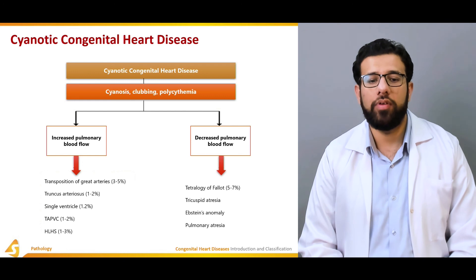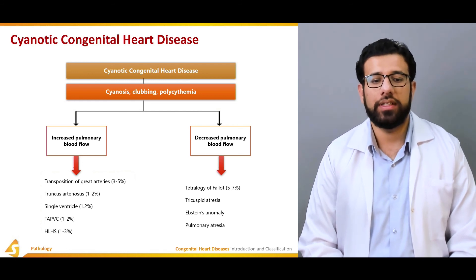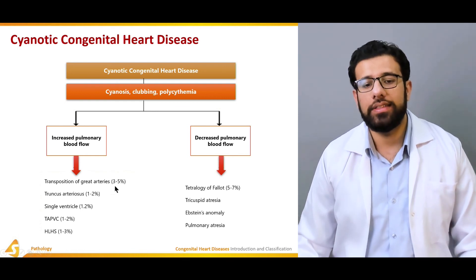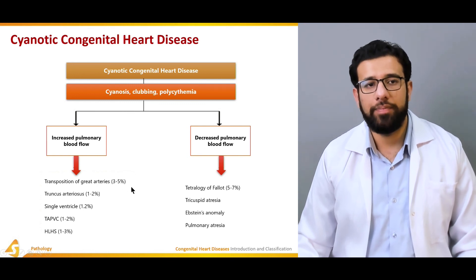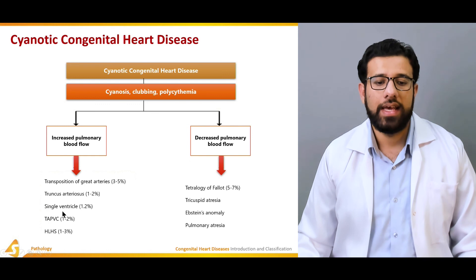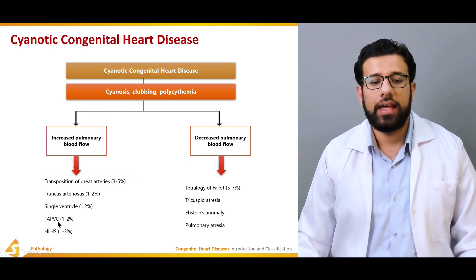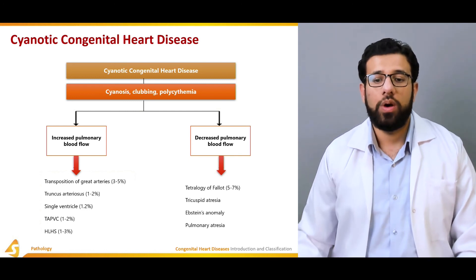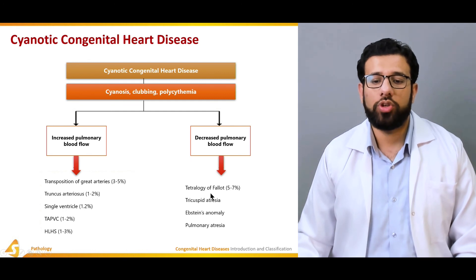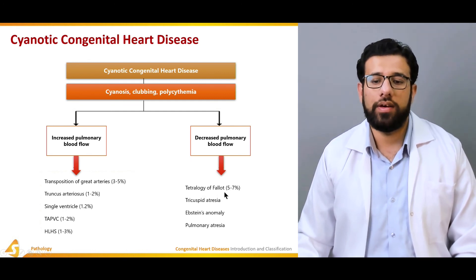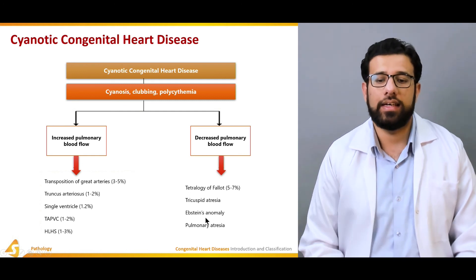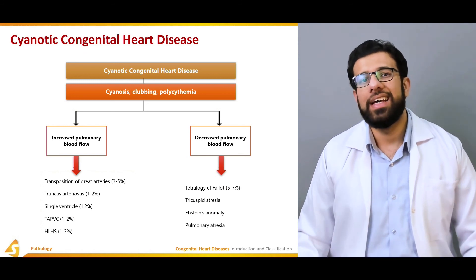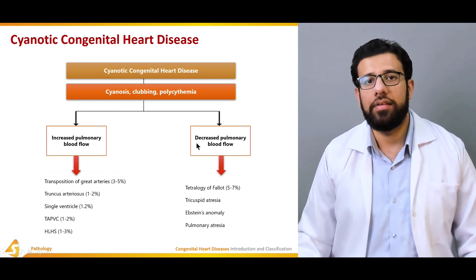Increased pulmonary blood flow in cyanotic conditions is seen in transposition of the great arteries, which accounts for approximately 3 to 5 percent of cases, truncus arteriosus at 1 to 2 percent, and single ventricle at 1.2 percent — all relatively rare anomalies. For decreased pulmonary blood flow, the most common is tetralogy of Fallot at 5 to 7 percent. Less common conditions include tricuspid atresia, pulmonary atresia, and Ebstein's anomaly.